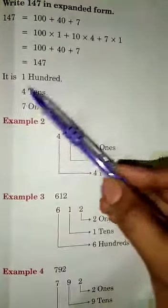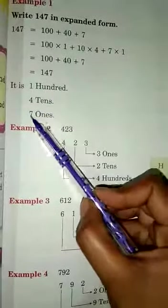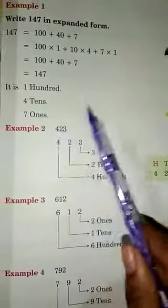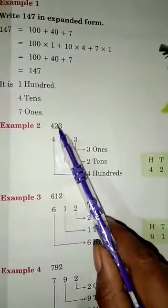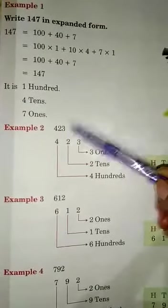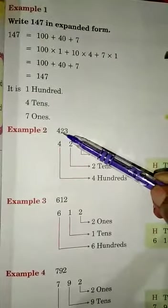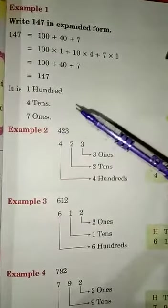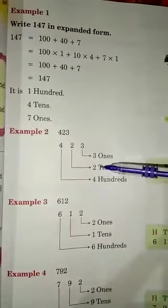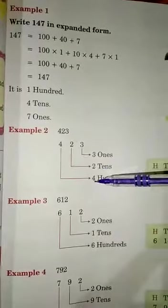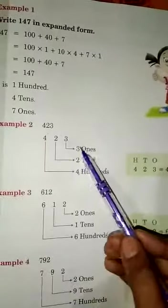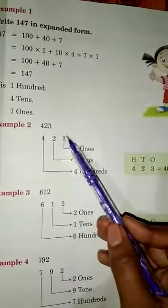Now, come to the next example. Example 2. 423. 3 in ones place, 2 in tens place and 4 in hundreds place.